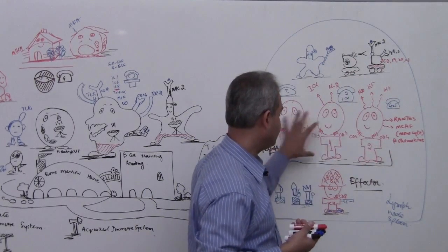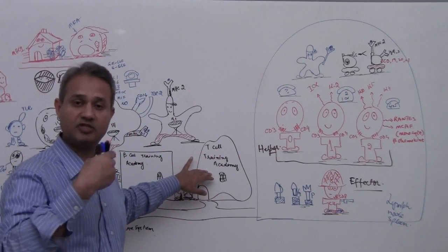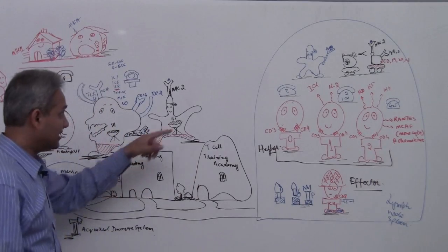All of them, helper T and cytotoxic were trained in the training academy for thymus, thymus training academy, and the B cell.